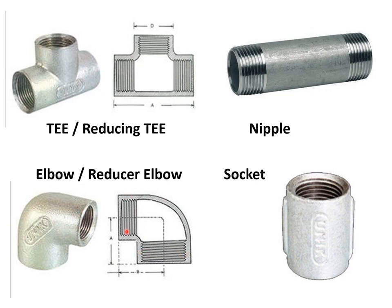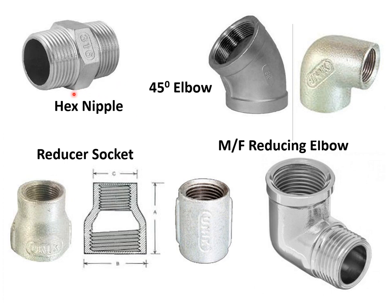The same concept applies to elbows: if both diameters are the same, then we call it a standard elbow; or if one side diameter is reduced, we call it a reducer elbow. This is the socket, which has threads at both ends on the internal side and is used to join two pipes in a linear manner. Based on its hexagonal external profile, a fitting known as a hex nipple has threads on either side. This is a 45-degree elbow, whereas earlier we saw the 90-degree or standard elbow. This is a reducer socket; a standard socket has equal diameters, but if one end has a reduced diameter, it is known as a reducer socket.